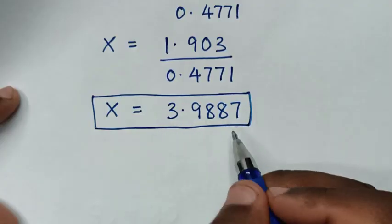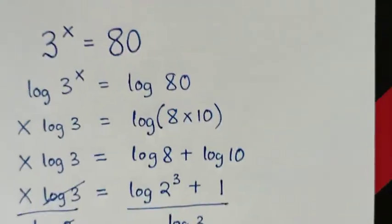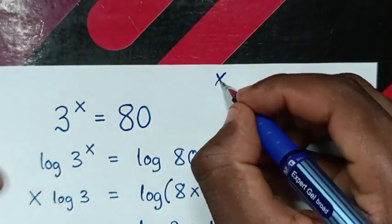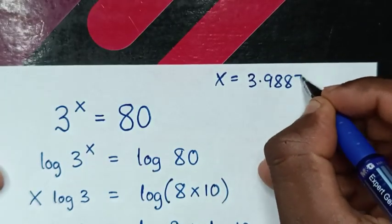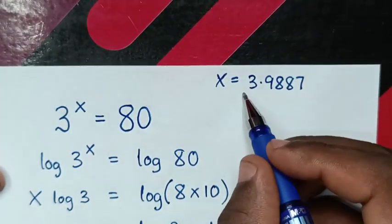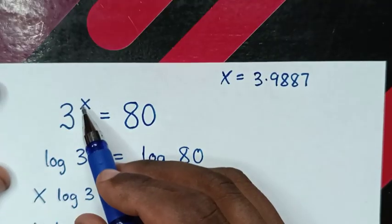Now to check if this answer is correct, back to our problem, for the value of x is equal to 3.9887. So we substitute this value of x into this power.